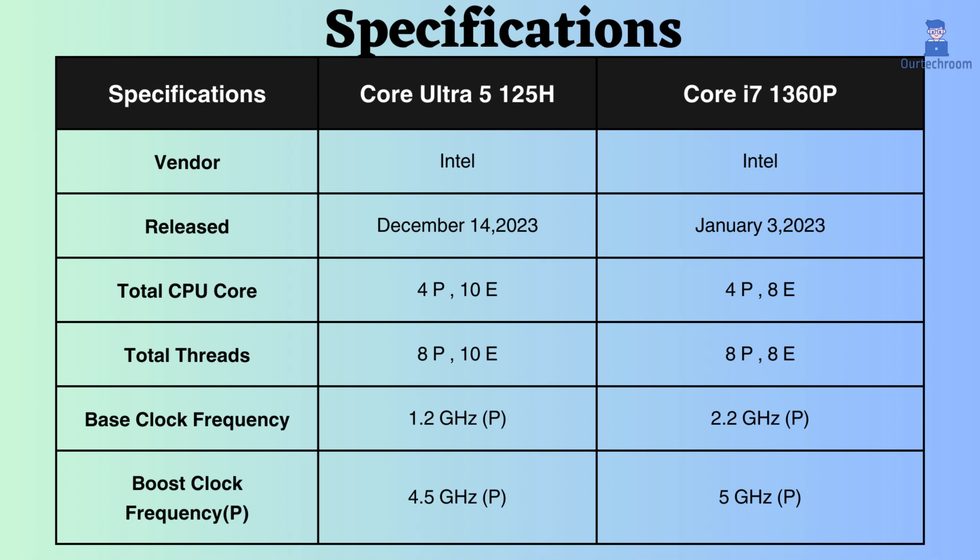The Core Ultra 5 125H has 4 performance cores and 10 efficiency cores, whereas the Core i7-1360P has 4 performance cores and 8 efficiency cores. Also, the Core Ultra has 8 performance threads and 10 efficiency threads, whereas the Core i7-1360P has 8 performance threads and 8 efficiency threads.